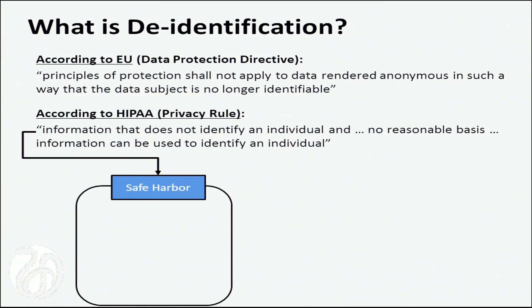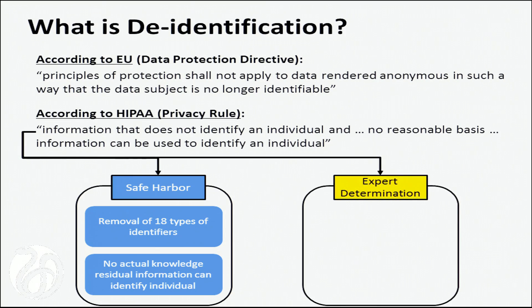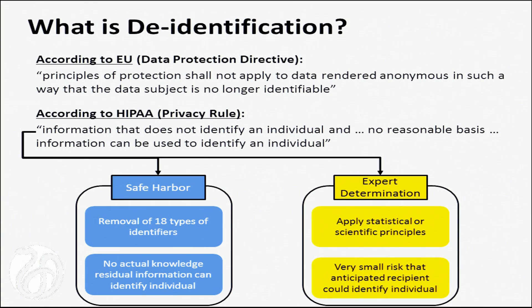Under the privacy rule, there are two potential routes specified. It irks me when people talk about safe harbor so much, because safe harbor basically says: remove 18 things and you're good to go. But people tend to forget there's also a requirement that you have no actual knowledge that the residual information can be used to identify an individual. If you don't satisfy that, it's not safe harbor. The other route is expert determination, where statistical or scientific principles are applied to show the data is no longer identifiable, or that there's a very small risk that an anticipated recipient could identify an individual.